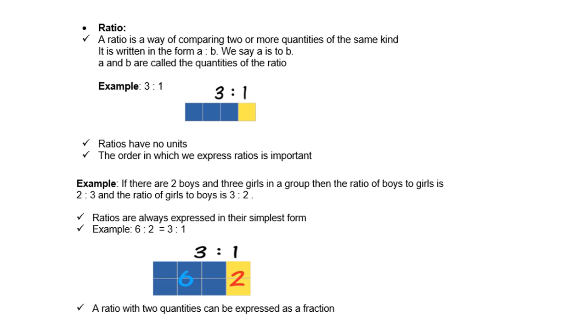Ratios are always expressed in their simplest form. Don't forget. For example, 6:2 is always the same as 3 is to 1. So ratios must always be simplified.